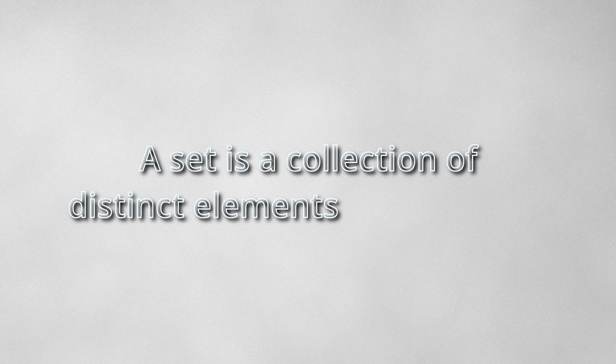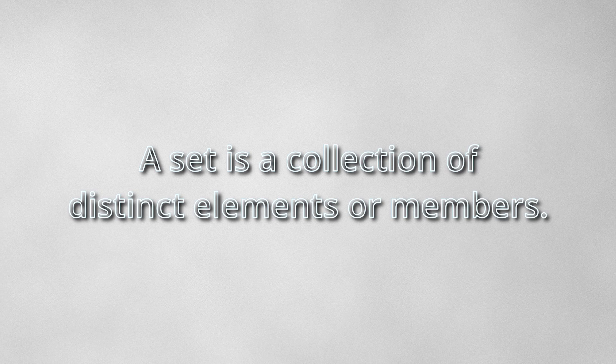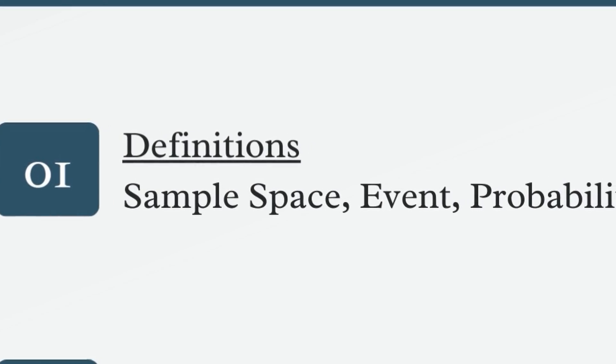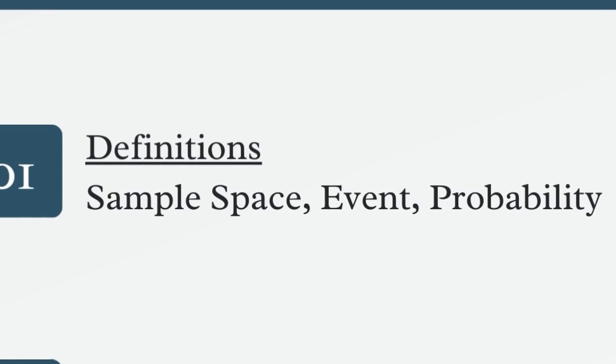Before we talk about set theory, we need to first define what a set is. A set is a collection of distinct elements or members. The notation for a set is written by listing its elements between curly braces. So if you have a set containing 1, 2, and 3, it would be written as open curly brace 1, 2, 3, close curly brace. We'll see how this comes into play when we talk about sample spaces, events, and probabilities.